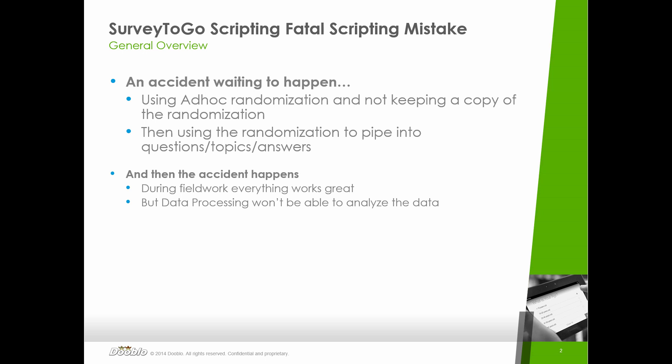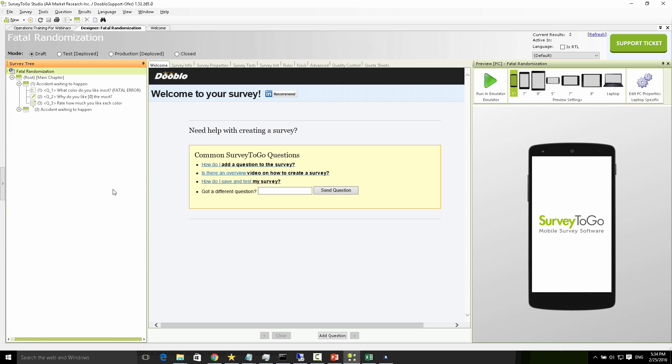When you actually do the accident is when you're using that randomization logic output with questions, topics, and answers — probably when piping stuff to them. What happens is that during fieldwork everything seems to be working great, but the actual data captured is completely useless. You're going to end up with a dataset that data processing simply won't be able to analyze.